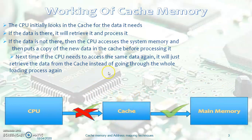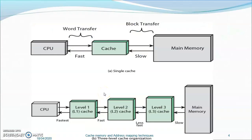Next time, if the CPU needs to access the same data again, it will just retrieve the data from the cache instead of going through the whole loading process again. This is the organization representing the single cache and three-level cache organization. In between the CPU and cache there is a word transfer; in between the cache and main memory, a block transfer is performed. Block transfer is slower compared to word transfer.